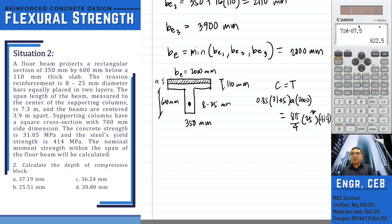So we can now solve for the value of A. The depth of stress block or compression block is 30.799 mm. And that is letter D.